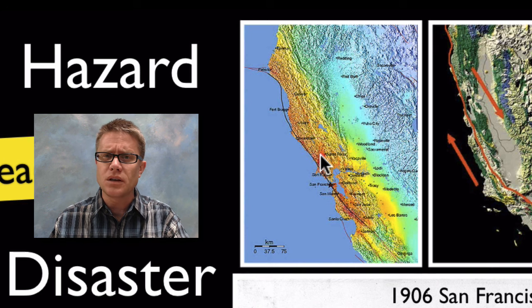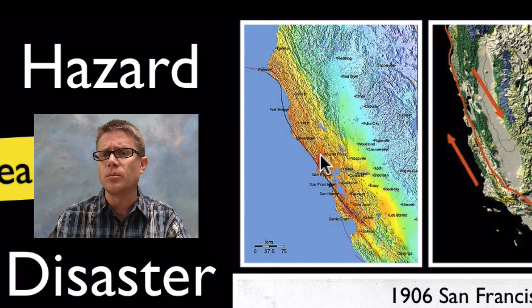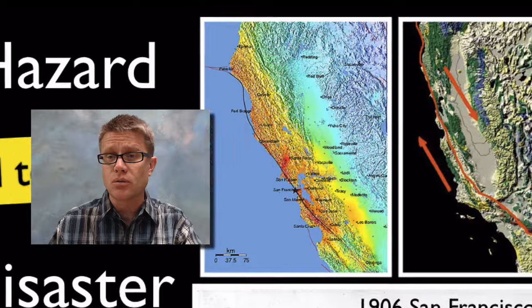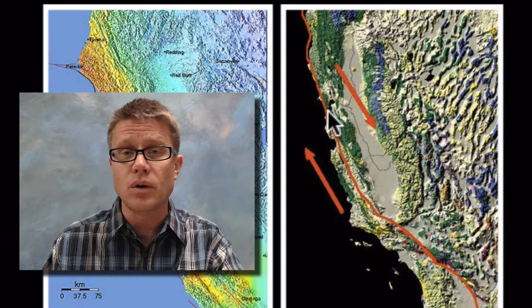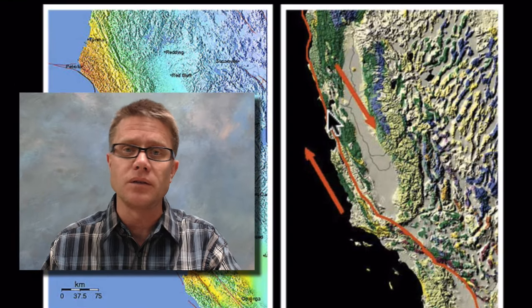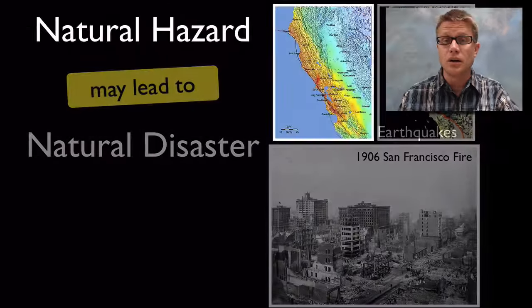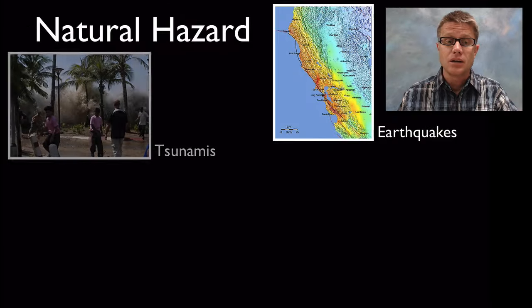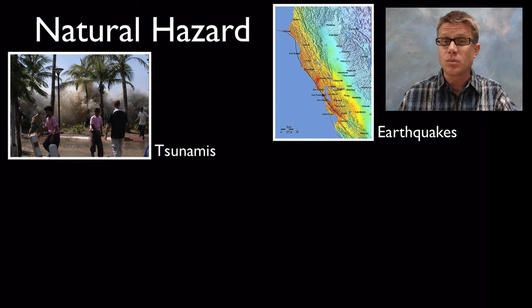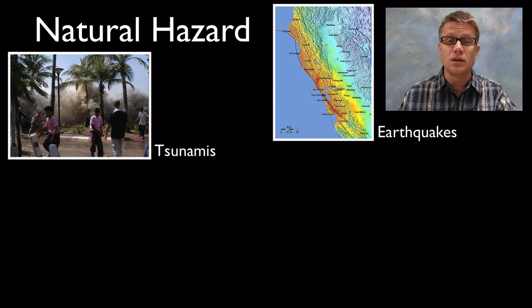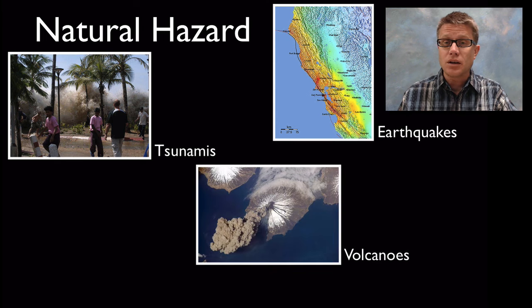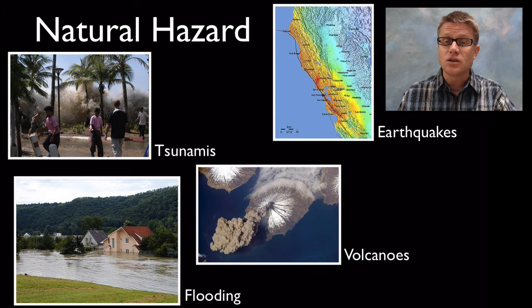Earthquakes have been occurring in the San Francisco area for probably millions of years and will continue for millions of years into the future — and we could have predicted that. If you look here, San Francisco is right next to the San Andreas Fault, where two plates are sliding past one another. An earthquake is an example of a natural hazard. Another natural hazard also caused by an earthquake is a tsunami, which is a massive wave created in the ocean. Volcanoes are examples of natural hazards, and so is flooding.